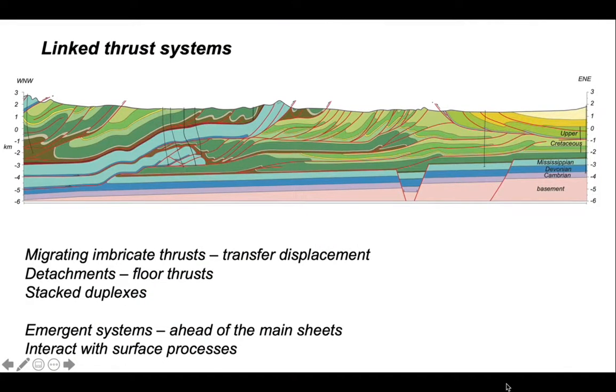So that's a brief look at linked thrust systems. We've seen how imbricate thrust systems can migrate towards the foreland creating a piggyback sequence, that they rely on having detachment horizons, a floor thrust, and in buried systems the thrusts recombine into roof thrusts. Emergent thrust systems ahead of the main thrust sheets interact with surface processes. The displacements in duplexes on the other hand have to recombine back up to a thrust that eventually somewhere else will interact with the Earth's surface.